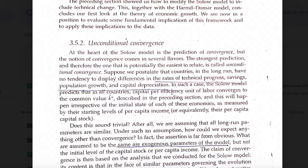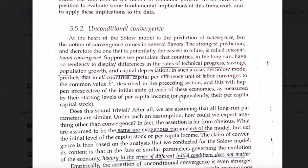Unconditional convergence hypothetically assumes that different countries have no tendency to display differences in the rates of technical progress, savings, population growth, and capital depreciation. If different countries share the same levels of these parameters, the Solow model predicts that capital per efficiency unit of labor — k-hat — converges to a common value, k-star-hat.